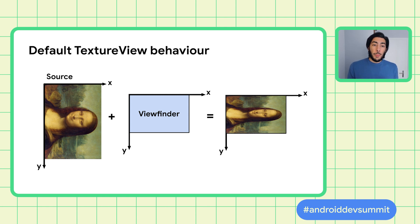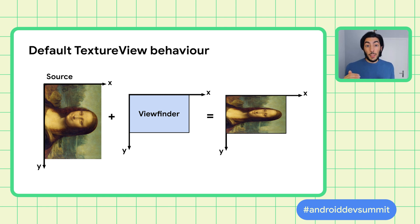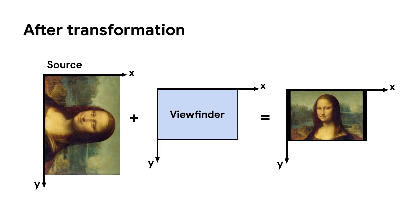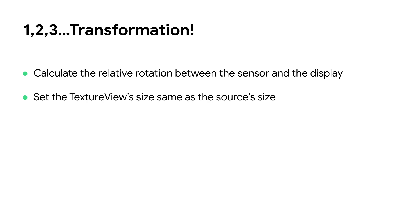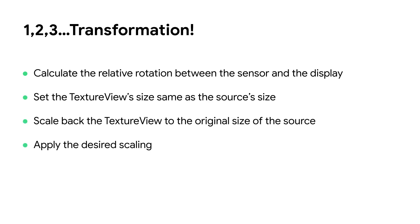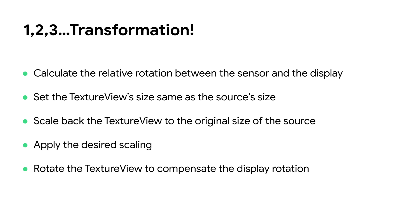What you just saw can happen because by default the preview will be scaled to fit the whole surface. This behavior may cause scaling problems since the X and Y axis may be scaled by different factors. Also, by default the TextureView does not handle display rotations. So it's up to the client application to correctly scale and rotate the video stream with a multi-step transformation. In particular, we will need to scale back the preview to its original size, applying the right scaling and then handling the rotations with a few adjustments.